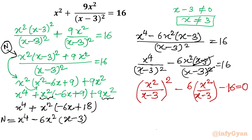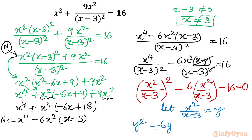You can see this is quadratic in the format x squared over (x minus 3). So I will let y equal x squared over (x minus 3). This substitution transforms the equation into y squared minus 6y minus 16 equal to 0.